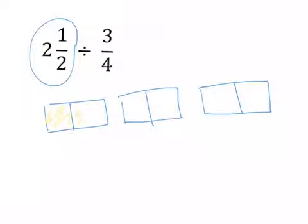And again, it says I have two, so there's a whole box, there's a second whole box, and I only have half of this one, so one out of the two pieces.